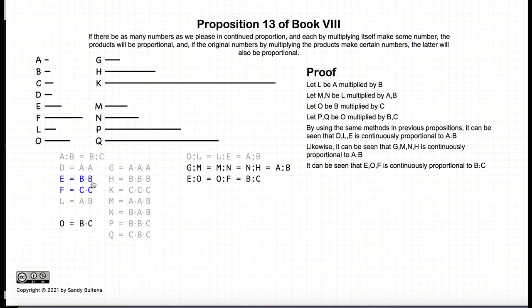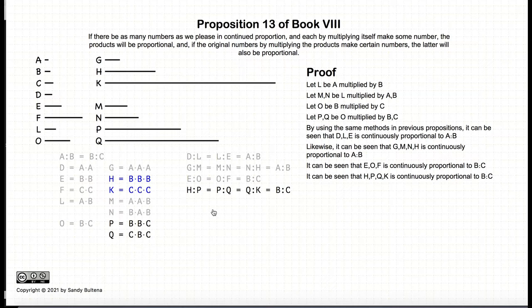Continuing along in the same vein, we can see that e:o = b:c and o:f is also equal to b:c. And again along the same vein, h:p = b:c, p:q = b:c, and q:k = b:c. So we have these numbers in proportion all equal to b:c.